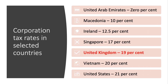Where does the UK fit internationally? Our corporation tax rate is a little bit below that of Vietnam, a fast-growing emerging country, and the United States, but we are ahead of Singapore, well above Ireland — which of course traditionally has had low corporate taxes — and Macedonia, another country using low corporate tax rates to attract inward investment. In the UAE, corporate tax is zero percent.